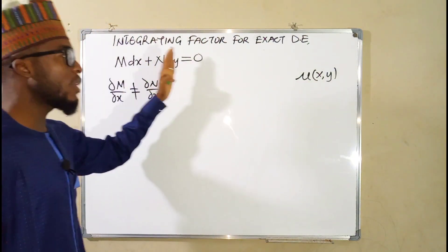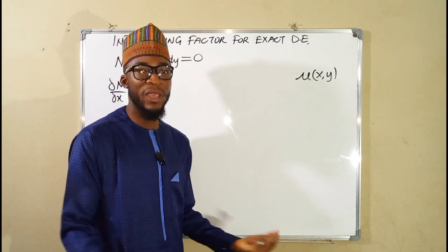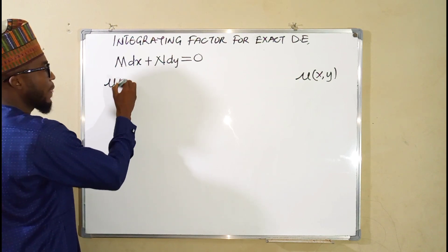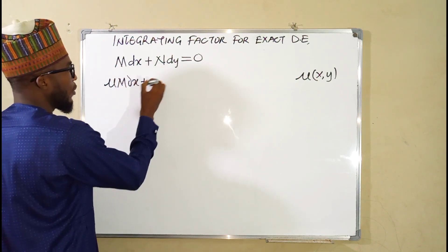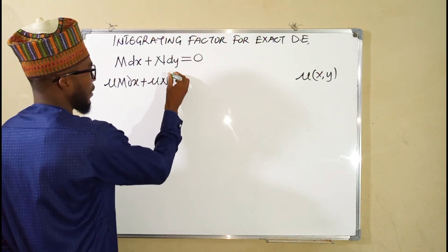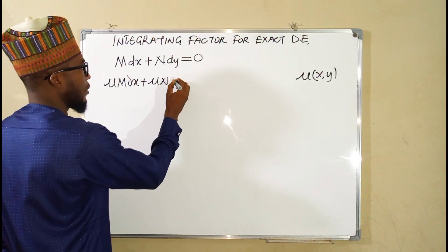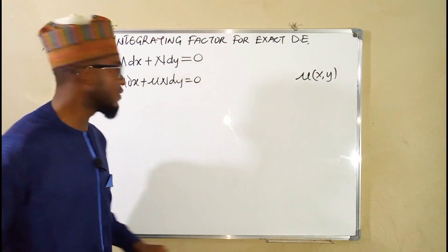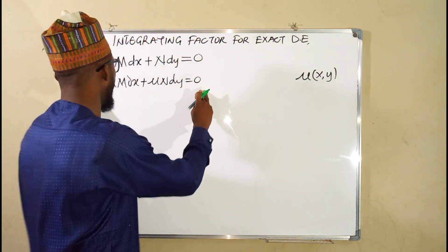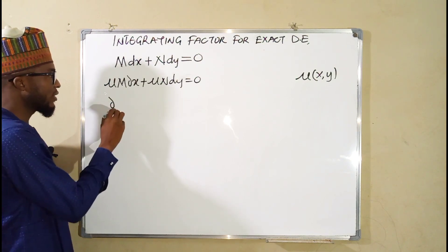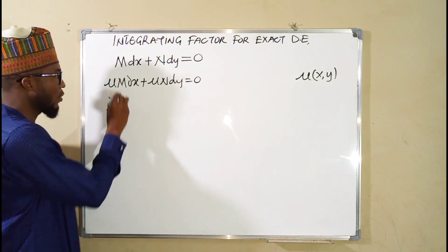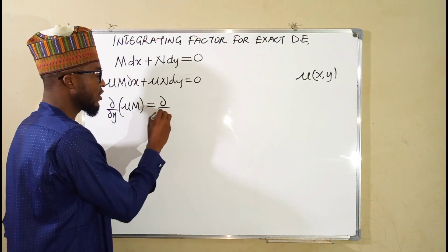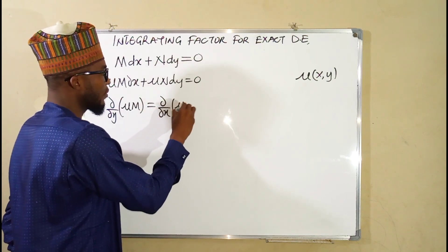We are going to multiply our main equation by this function to make it exact. So we have mu·M dx plus mu·N dy equals 0, because multiplying our integrating factor by 0 is still 0. So if this is an exact differential equation, it means the partial derivative with respect to y of mu·M must equal the partial derivative with respect to x of mu·N.